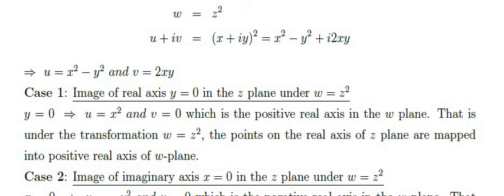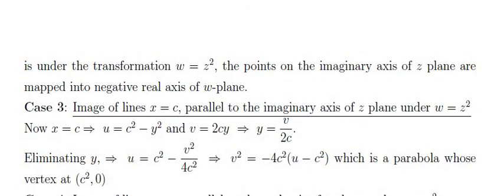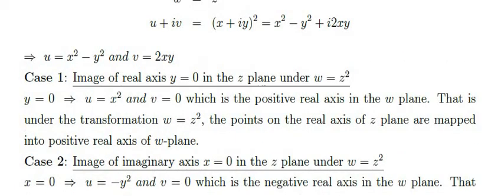Case 2: Image of the imaginary axis x = 0 in the z-plane under w = z². Substituting x = 0, we get u = −y² and v = 0, which is the negative real axis in the w-plane. So under the transformation w = z², points on the imaginary axis are mapped to the negative real axis.